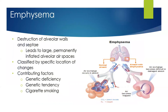Emphysema is the destruction of the alveolar walls and septa, which leads to large, permanently inflated alveolar airspaces. When we talked about atelectasis, those airspaces are collapsed and closed — emphysema is the opposite. These airspaces are actually hyperinflated and can't get rid of the air. That trapped air just sits in there and all of that space becomes unusable for gas exchange. Contributing factors include genetic deficiencies and tendencies, but by far the most impacting factor for COPD is cigarette smoking. With emphysema, air becomes trapped in the alveoli and just can't get out because of the damage specifically to the alveolar tissue.